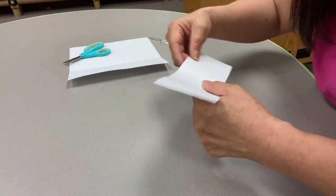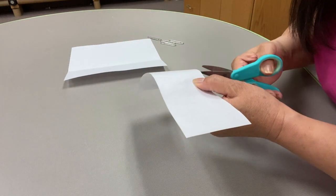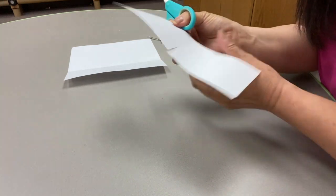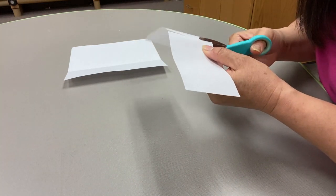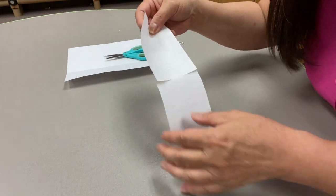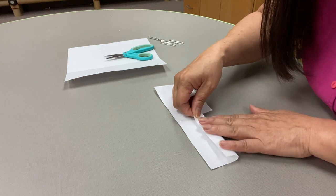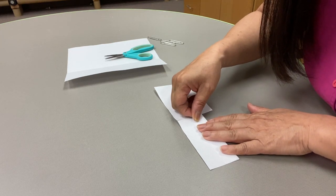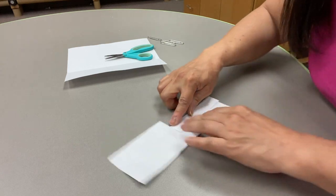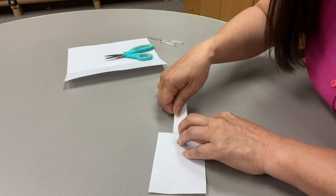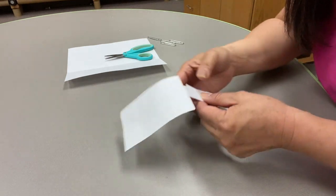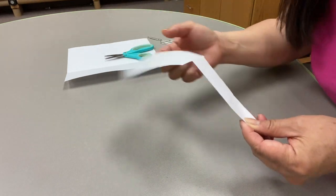And where you creased it, cut one third of the way. And then fold it into thirds. And this is the base of your twirlybird.